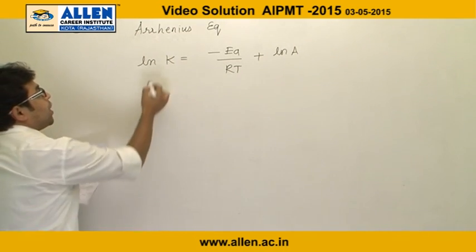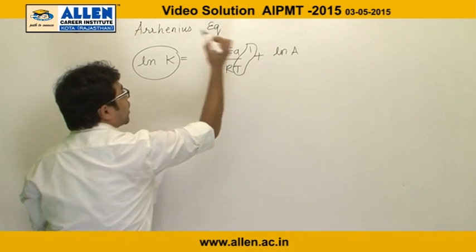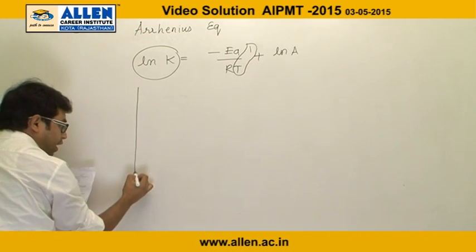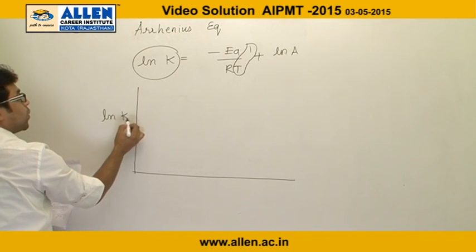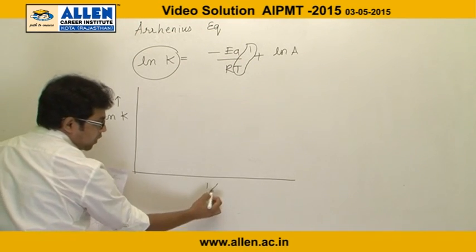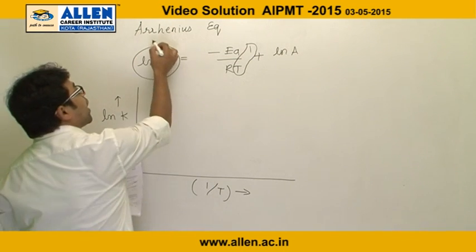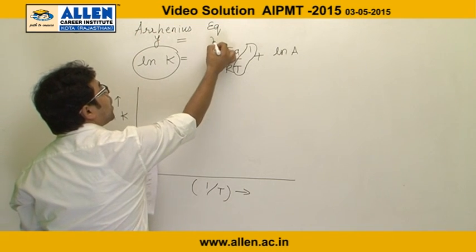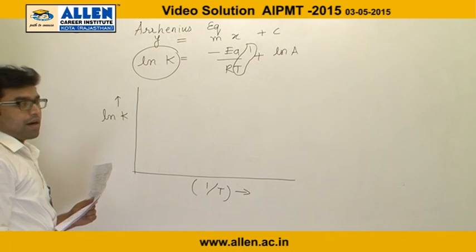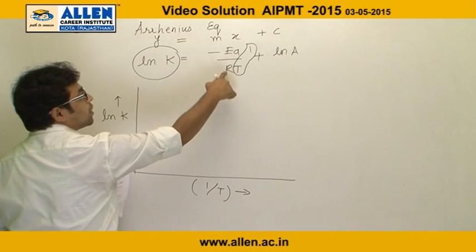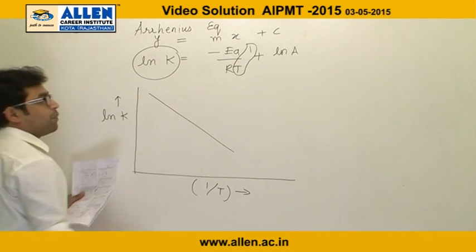In this equation, if we plot the graph between lnk versus 1/T, then the graph is a straight line of the form y = mx + c. The slope of this line is -Ea/R, giving a negative slope and a positive intercept.